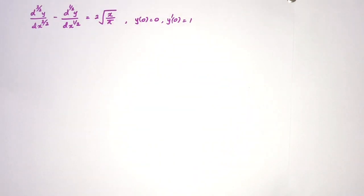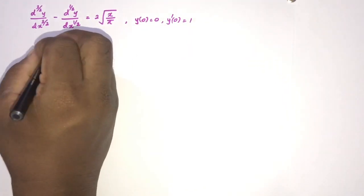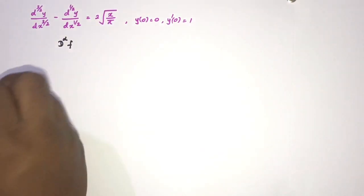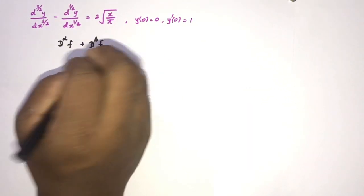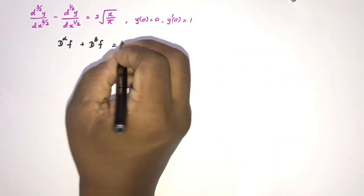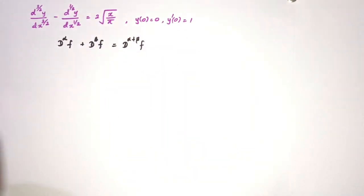First, we discuss fractional differential equations and fractional calculus — specifically the half derivative. We know that if we have the alpha derivative of a function and the beta derivative of a function, where alpha and beta are any real numbers, we can write this as d^(alpha+beta) of the function.